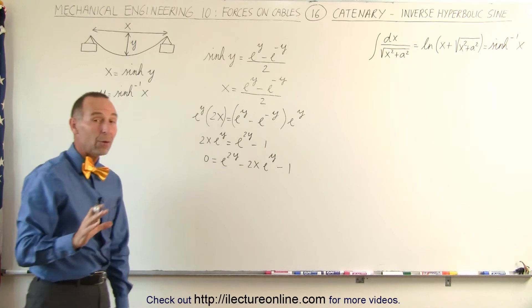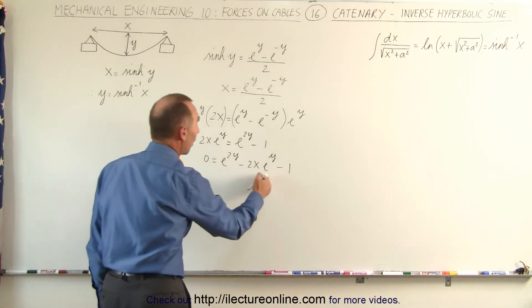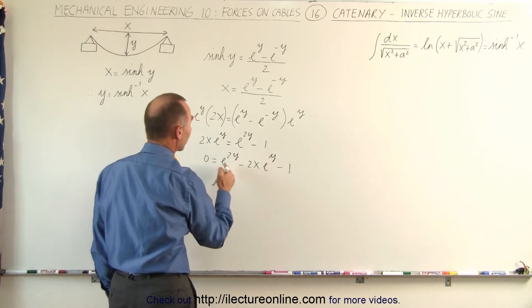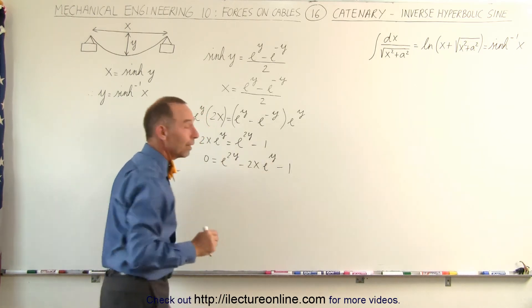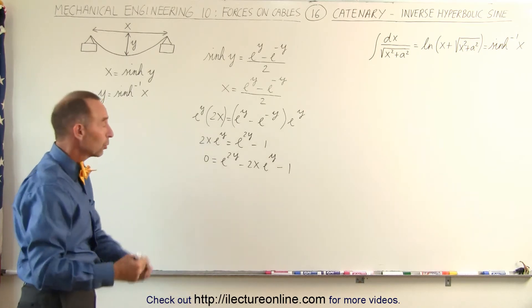And notice now we have a quadratic equation where the variable basically is e to the y. Instead of x, we have e to the y. Instead of x squared, we have e to the 2y. So we can solve that quadratic equation just like we would a normal quadratic equation.